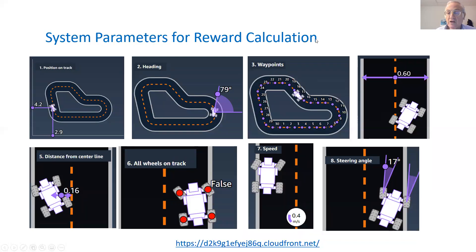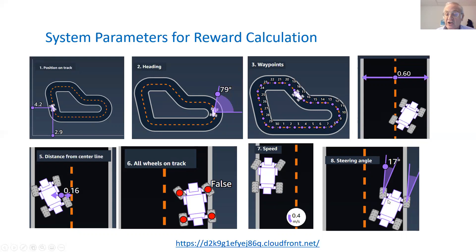The parameters we can use to define the reward include the position of the car as X, Y within a universal coordinate system, the heading of the car in this global coordinate system, waypoints — about 30 waypoints grouped along the track — the width of the track as a parameter, and the distance of the car from the center line. We may give it a high reward if the distance is low and a low reward if the distance is high. There is also a true/false parameter for all wheels on the track, and speed and steering angle are additional parameters.